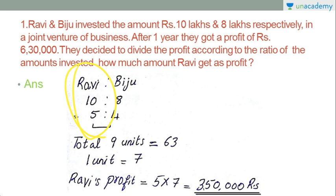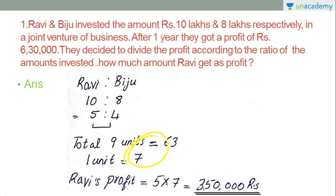The value of one unit is 7, so there are 5 units. The profit for Ravi is 5 into 7, which is 35. So the answer for this question will be Rs. 3,50,000 rupees. That will be the profit.